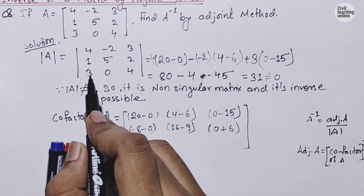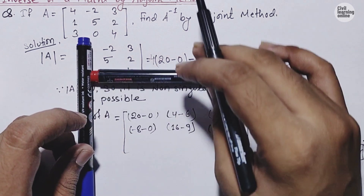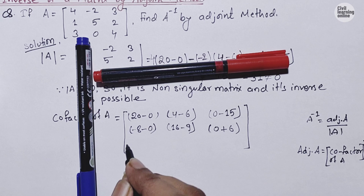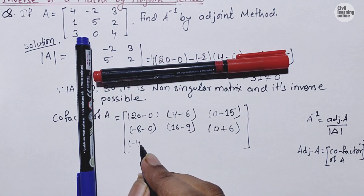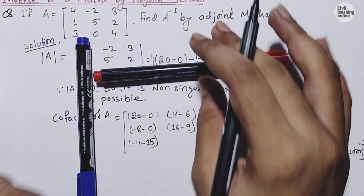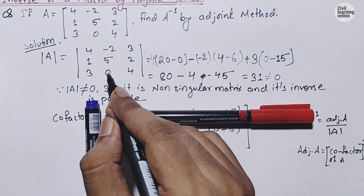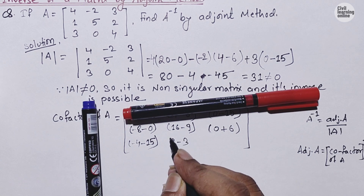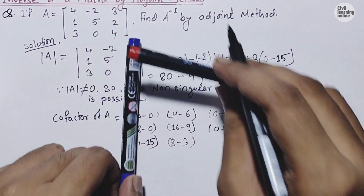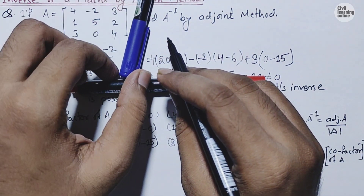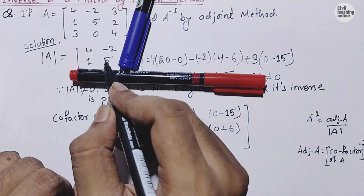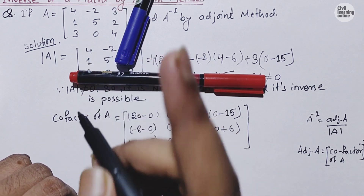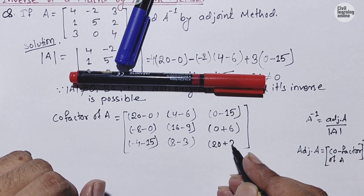For the third row: For element 3, cover its row and column; remaining elements are −2, 5, 2, 0: −2×0 − 5×2 = 0 − 10. Wait — remaining elements are −2, 2, 5, 3 (correcting from audio): −2×2 = −4 and 5×3 = 15 (upward, negative), giving −4 − 15 = −19. For element 0, remaining elements give 4×2 − (−1)×3 = 8 + 3 = 5. For element 4, remaining elements 4, 5, 1, −2 give: 4×(−2) − 5×1 = −8 − 5 giving result used as 22.